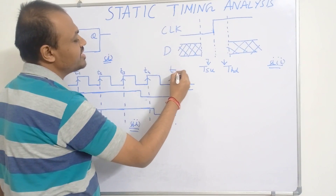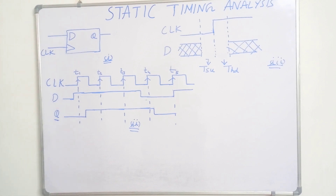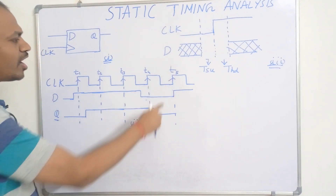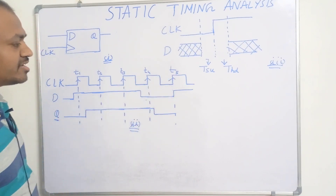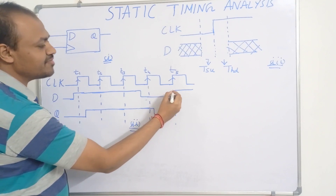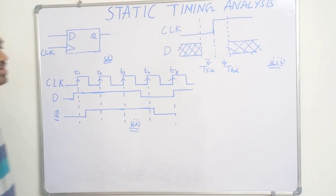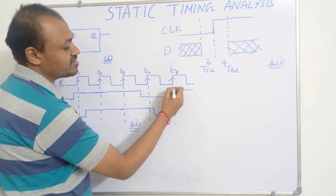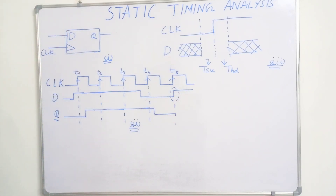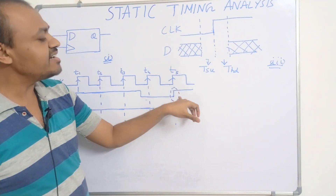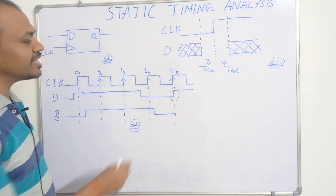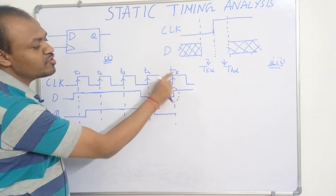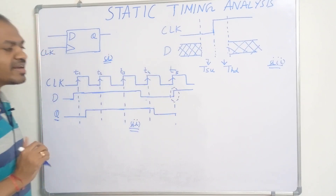But consider time instant T5. At T5 the clock positive edge has arrived. But at the same instant T5, this D input has also changed. You can see at T5, D is going from 0 to 1. This is the problem because now the output — we cannot say with certainty what will be the output, because both clock and D input are changing at the same time. The clock is going from 0 to 1 and D input is also going from 0 to 1 at the same time.